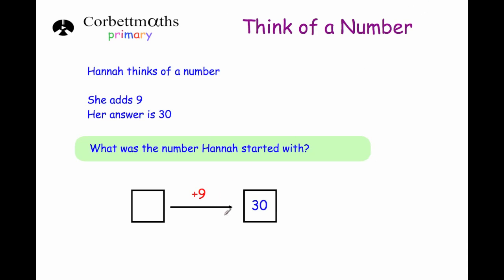We need to figure out the missing number. For these types of questions, I would always say to work backwards. We know that nine was added, so to work backwards we do the inverse — the opposite. The opposite of adding nine is subtracting nine. So 30 take away nine gives us 21. Our answer is 21, and if we check it: 21 plus nine is 30.